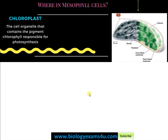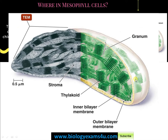Inside the mesophyll cell there is a wonderful organelle called the chloroplast, responsible for photosynthesis. It contains pigments capable of trapping light energy and converting it to chemical energy and finally to glucose. The chloroplast is a double membrane-bound organelle with membranous sacs stacked one above the other called grana. Individual membranous sacs are called thylakoids, and the fluid-filled matrix is called the stroma.